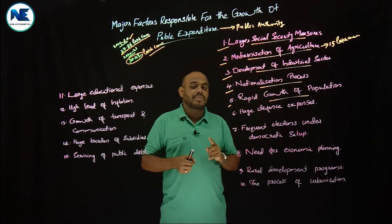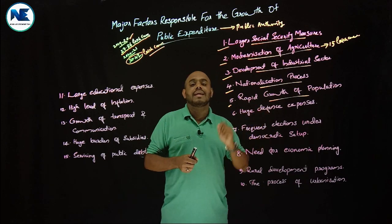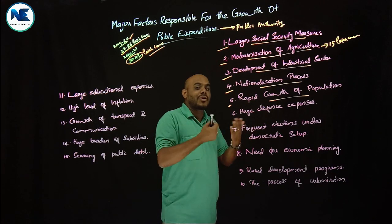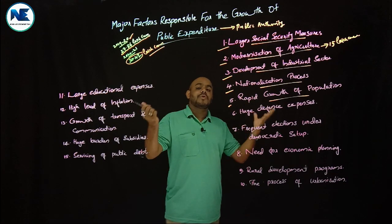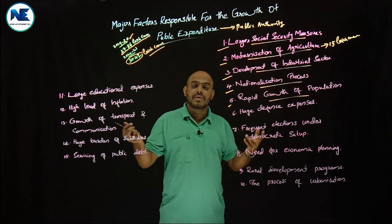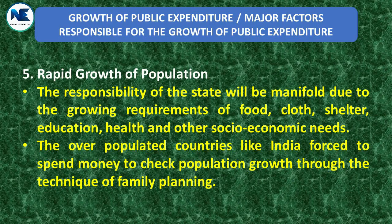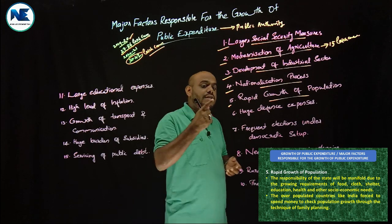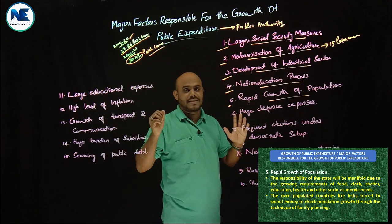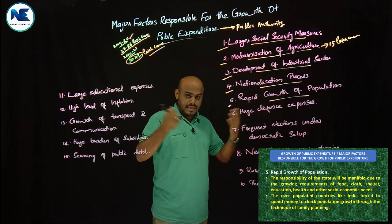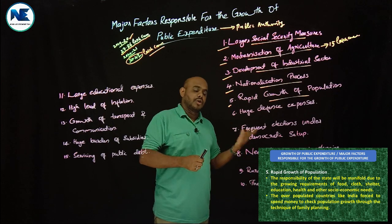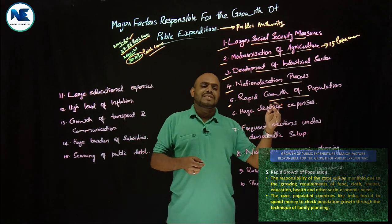As per the 2011 census there were over 120 crore people, and now India has 130-135 crore — a very huge population. India is projected to overtake China. For this large population, the government must spend on education, basic needs like food, clothing, shelter, and employment programs. Rapid growth of population is thus a major factor responsible for the growth of public expenditure — with expenditure on healthcare facilities, family planning measures, and so on.